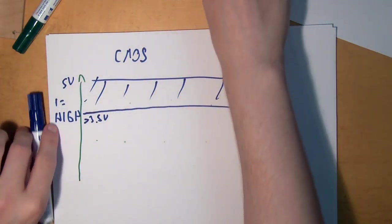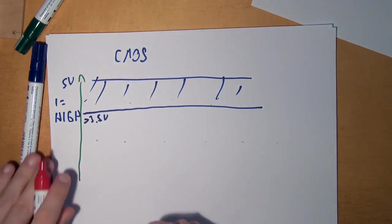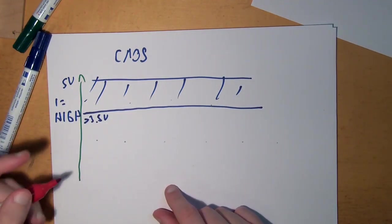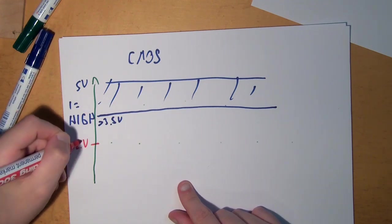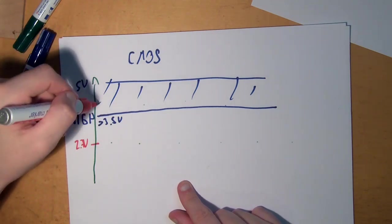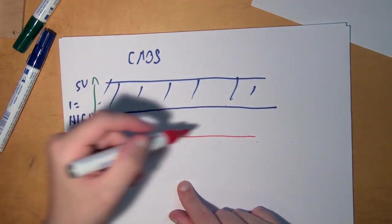For a TTL though, high is in a different range. For a TTL, high is between 2.7 and 5 volts. So it's somewhere in this area.